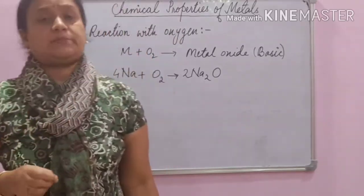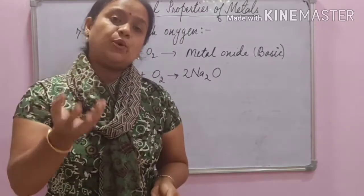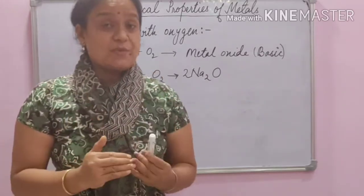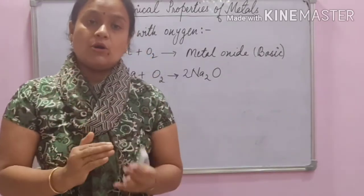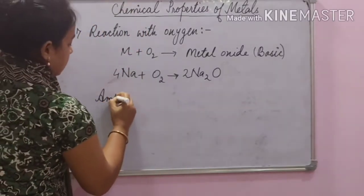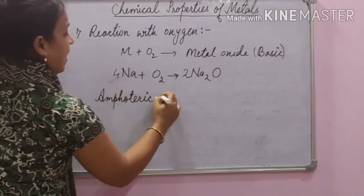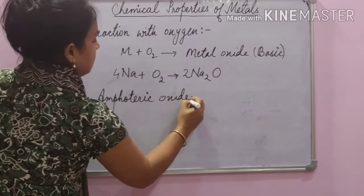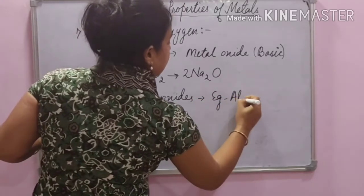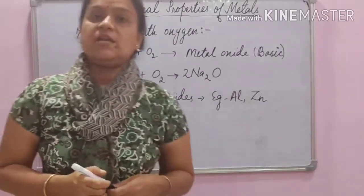There are a few exceptions. Some metal oxides can react with both acids and bases to form salt and water. Such metal oxides are called amphoteric oxides — those which react with both acid as well as bases. For example, the oxide of aluminium and the oxide of zinc are amphoteric in nature.